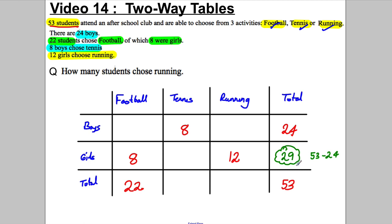Now what else could we work out? We could work out the missing girls doing tennis because we know in total they have to add to 29. These two currently add to 20 so this must clearly be 9 because we want 8 add 9 add 12 to add to 29. Now we can work out the total doing tennis: 8 add 9 is 17.